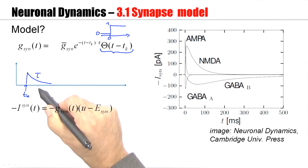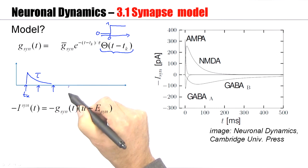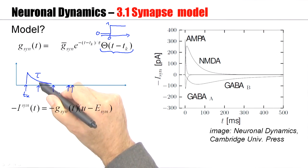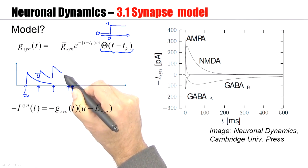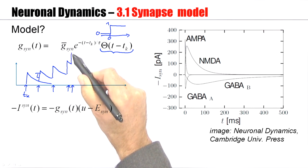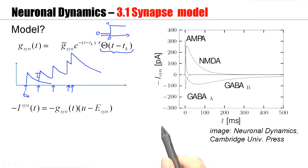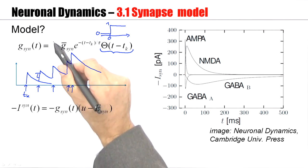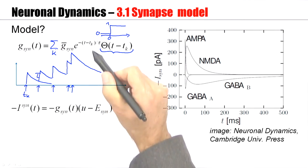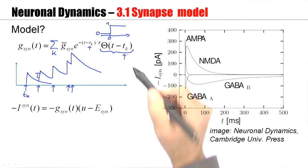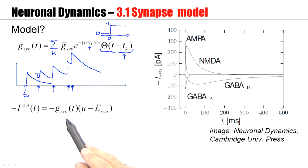Now, suppose we have many spikes. Spikes arriving at different moments in time. Then, the first spike would cause this response. The second spike would cause another response that adds to the first one. The third spike would cause yet another response, the fourth and the fifth spike as well. So, the total synaptic conductance is the sum over all these different contributions, the sum over all the different firing times tk. And it's this total synaptic conductance that inserted here into the equation, multiplied with the drive, and this gives the synaptic current.